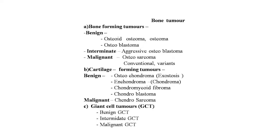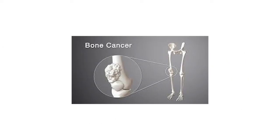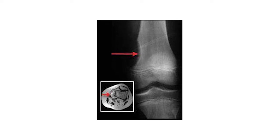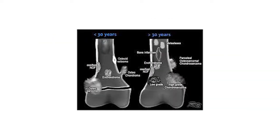On screen is an image clearly showing bone cancer — a bony growth on the lower one-third of the femur. The next image shows osteosarcoma: healthy bone alongside cancerous bone growth on the shaft of the femur. Further images show bone tumors in patients less than 30 years and more than 30 years of age.